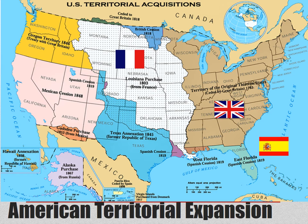Next, we look to Texas. Mexico had invited Americans to move to Texas, but there was a problem: Americans wanted to bring their slaves, and Mexico had outlawed slavery. This caused friction, and eventually these Americans — known as Texians — fought for and won their independence after historic battles like the Battle of the Alamo, becoming an independent republic. They then asked to join the United States, but we didn't let them in initially because they wanted to enter as one large slave state and we needed something to balance it out.